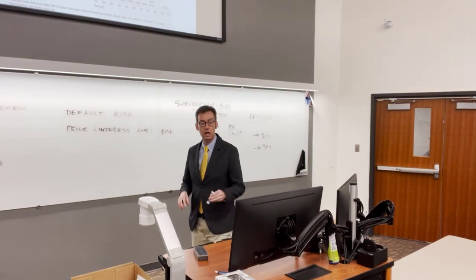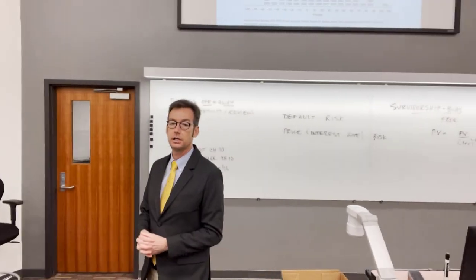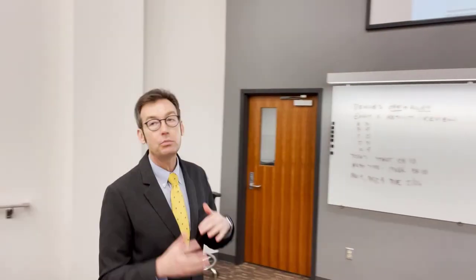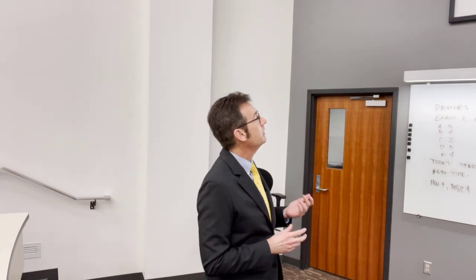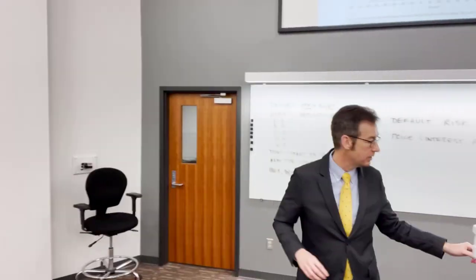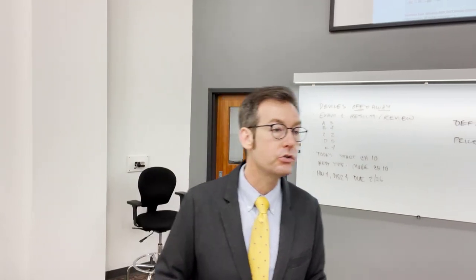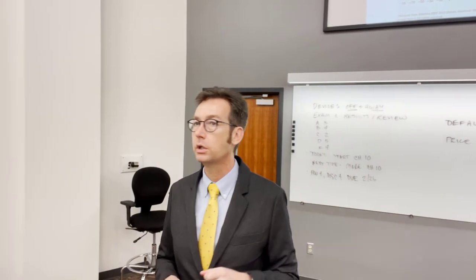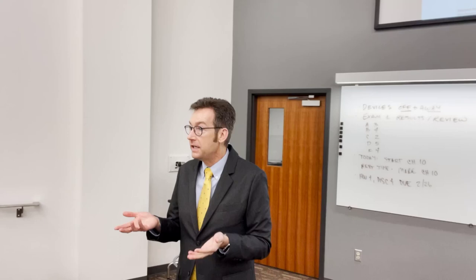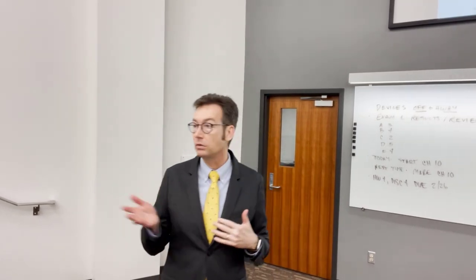Now let's look at stock returns over time using histograms. We create buckets in 10% return increments and stack up the years by which bucket they fall into. The top histogram — large company stocks — actually looks like something from your statistics class: the normal distribution. We're going to assume that stock returns are normally distributed, though statisticians would note we only have data since 1926 and the sample size isn't enormous. For large company stocks, it kind of fits.